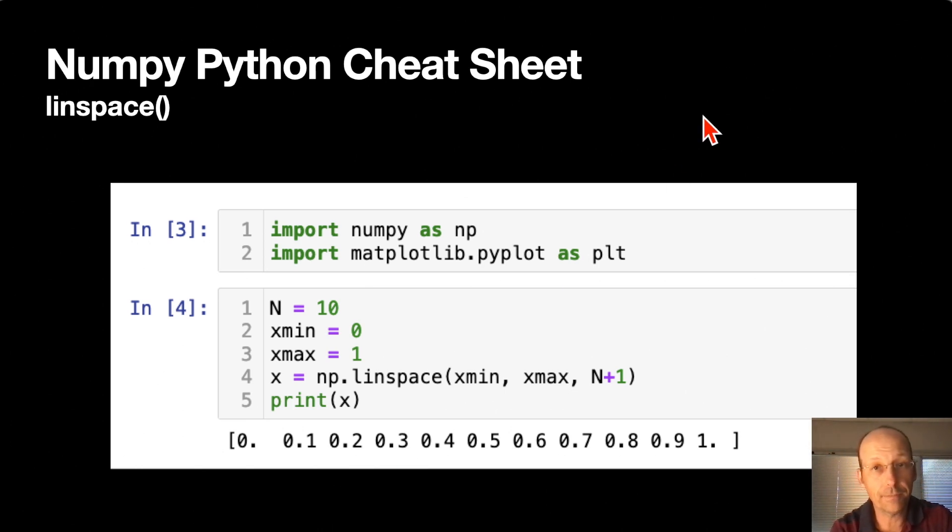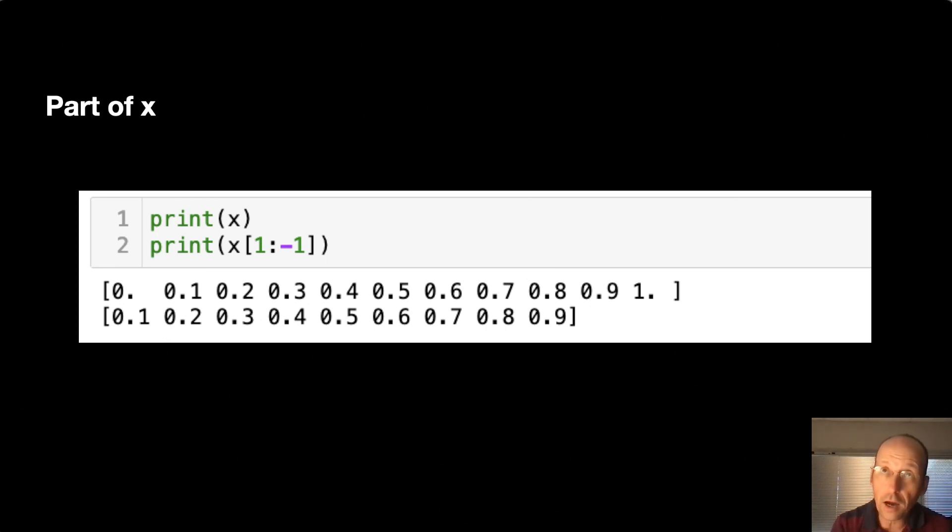Next, how do you get just part of an array x? This comes up because when we make our x values from 0 to 1 and then make our psi values, we don't want to do it at 0 and we don't want to do it at 1. We want to cut off the endpoints. x square bracket 1 means start at the second element, and negative 1 end at the second to last element. So don't include the last or the first element. Here I printed it out. There's 0 through 1, and then it cut off the 0 and it cut off the 1.